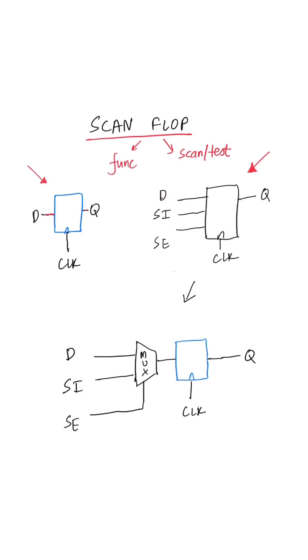In regular flops we have one D pin and one Q pin, but in case of a scan flop we have two additional pins as seen here: the scan in pin and the scan enable pin. So a scan flop will be bigger than a regular flop.